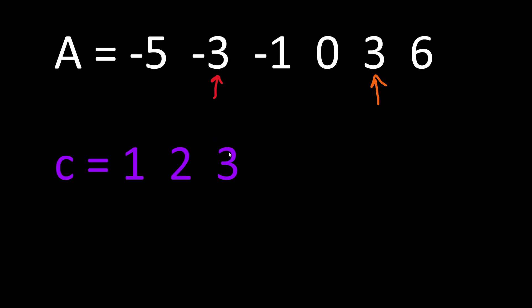They are equal, so we don't increment our counter of distinct elements because these two absolute values are not distinct. The reason we do this procedure is that for every element we are going to check for symmetry around zero in the array.